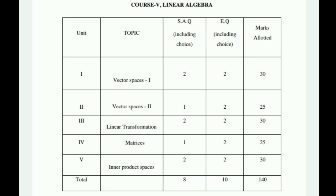First, let's look at the blueprint. The syllabus has a total of five chapters as usual. Chapter One: Vector Spaces — Two Short questions and Two Essay (SS) questions; very important. Chapter Two: Vector Spaces Part Two — One Short and Two SS, worth 25 marks. Chapter Three: Linear Transformations — Two Shorts and Two SS, very important. Chapter Four: Matrices — One Short and Two SS. Chapter Five: Inner Product Spaces — Two Shorts and Two SS. Chapters One, Three, and Five are the most important — preparing these three confirms more than pass marks.